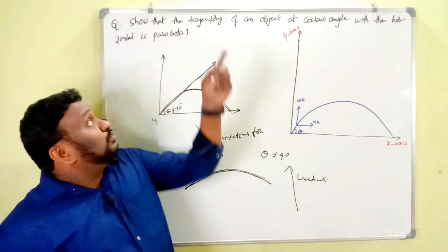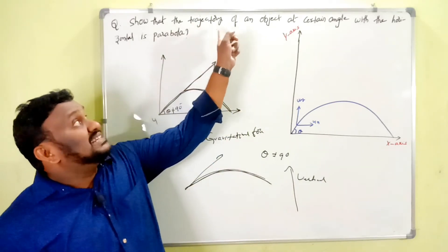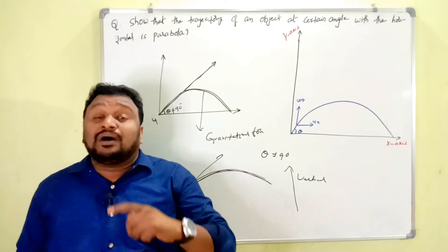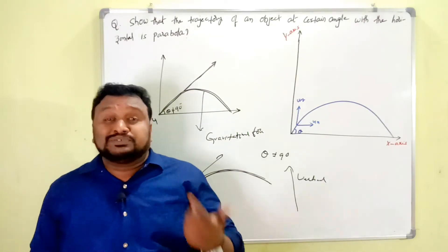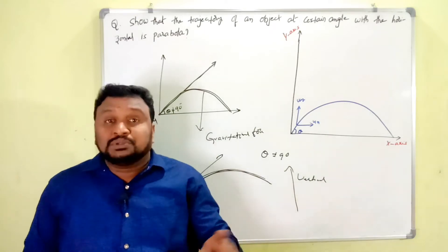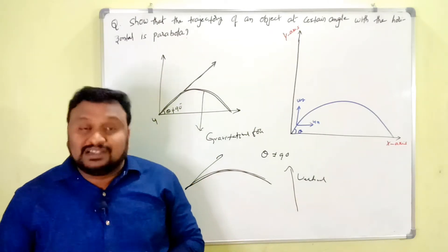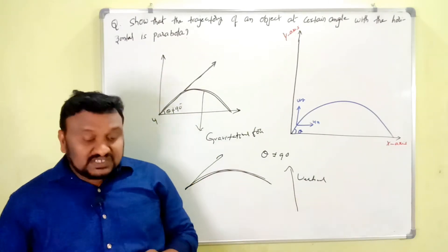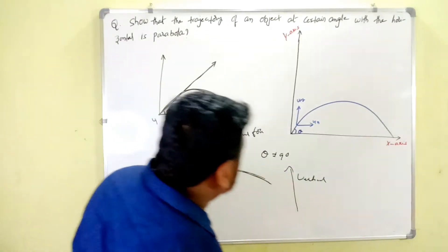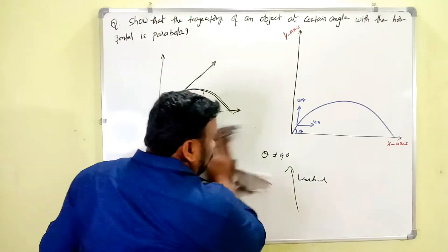One important term here is trajectory. Trajectory means the path followed by the projectile. This is the general idea about what a projectile is and its examples.